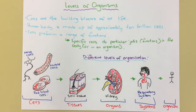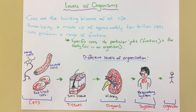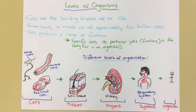Those levels are cells, tissues, organs, systems, and then the organism itself. An organism is made up of a range of systems. Those systems are made up of a number of organs. Those organs are made up of a range of types of tissues, and tissues are made up of specific cells.